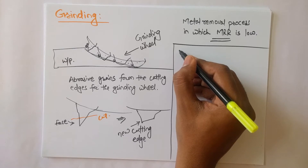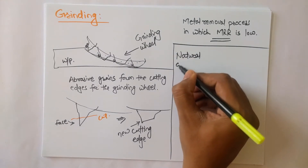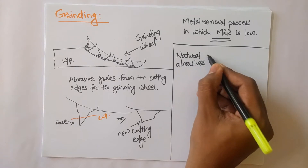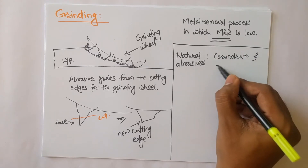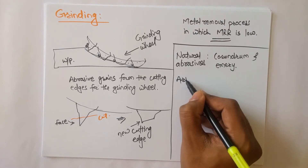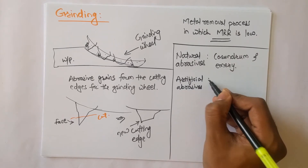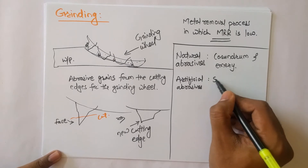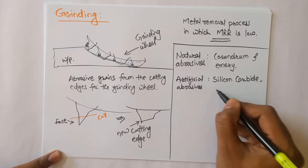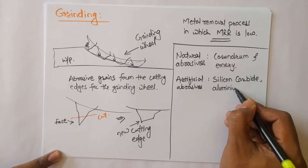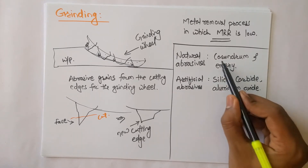There are different types of abrasive grains. Some are natural abrasives such as Corundum and Emery. In artificial abrasives, there are Silicon Carbide and Aluminium Oxide. So these are the artificial abrasives and these are the natural abrasives.